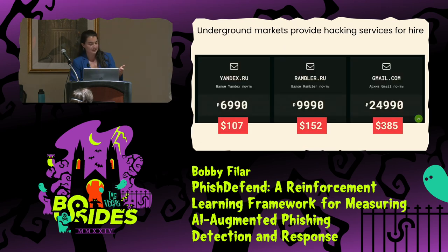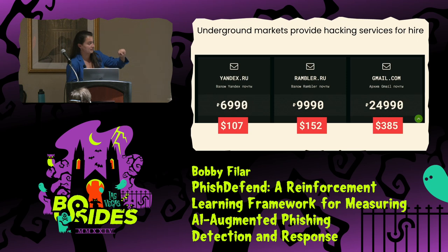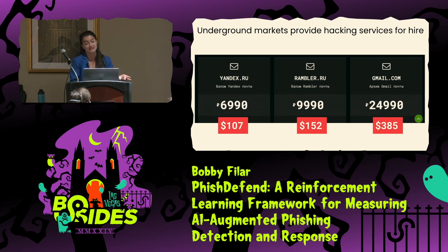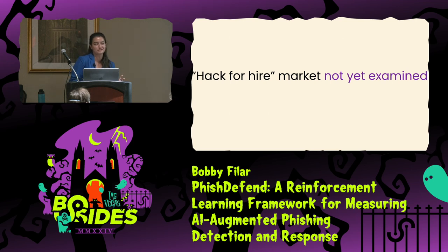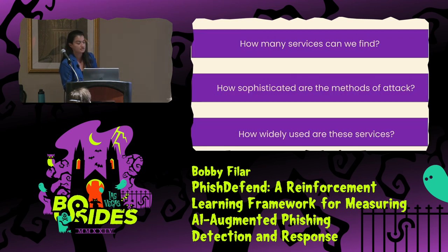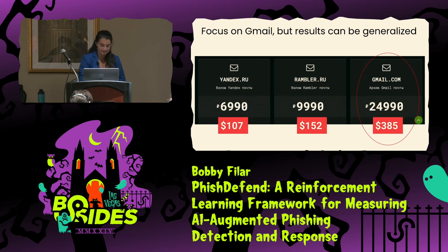At the time of this study — and it still exists today — there is an underground market that provides hacking services for hire. This is an example of one advertisement: a hacking group that purports to break into any Yandex, Rambler, or Gmail account for anywhere from $100 to $300 US dollars. This hack-for-hire market had not yet been examined. The reality is that $100 to $400 is actually pretty reasonable for a lot of us if we've been jilted by an ex-boss, an ex-partner, etc. Me and my colleagues set out to answer three main questions: how many services can we find, how sophisticated are the methods of attack, and how widely used are these services — with the overarching goal to figure out what better defenses we can build.